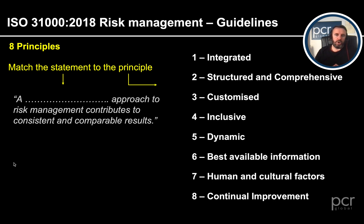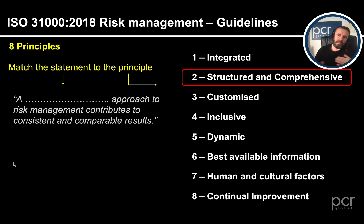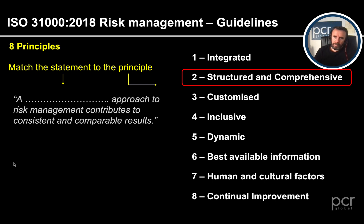A something approach to risk management contributes to consistent and comparable results. We've got consistency and comparability in there — that is going to be structured and comprehensive. We've got to work out what that structure looks like, embed it into the organisation, and people have to be trained on it. It must be as comprehensive as is needed. When we develop the framework and the policies, and look across the organisation to embed this in, structured and comprehensive gives us the best potential for consistency.